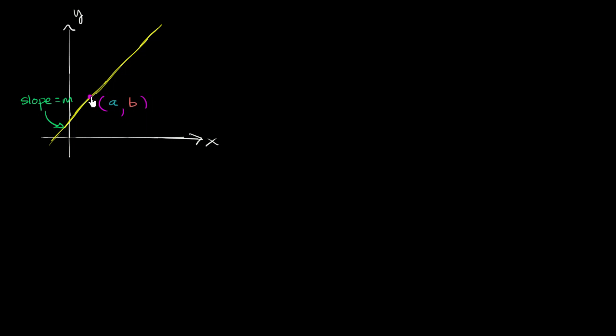Well, let's try it out. So any point on this line, or any x comma y on this line, would have to satisfy the condition that the slope between that point—so let's say that this is some point x comma y, it's an arbitrary point on the line—the fact that it's on the line tells us that the slope between a comma b and x comma y must be equal to m.